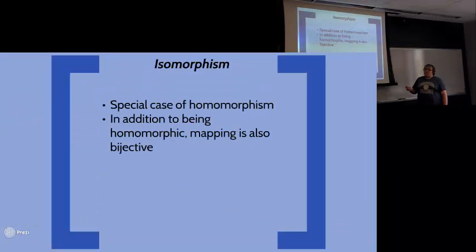An isomorphism is a special case of homomorphism. In addition to being operation preserving, the function is also going to be one-to-one and onto, or bijective.